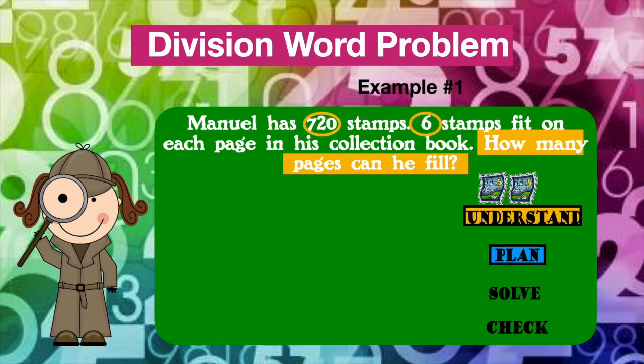Now it's time to plan. Here, we choose a strategy that makes sense and works best for us. When we look at the problem, there is a keyword that helps us answer it. Can you guess what it is? If you said the word 'each,' you are correct. 'Each' tells us that we must divide.